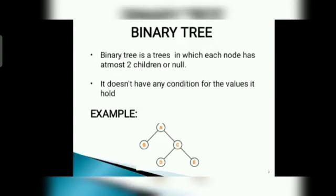What is binary tree? A binary tree is a tree in which each node has at most two children nodes. It does not have any condition for the value it holds.